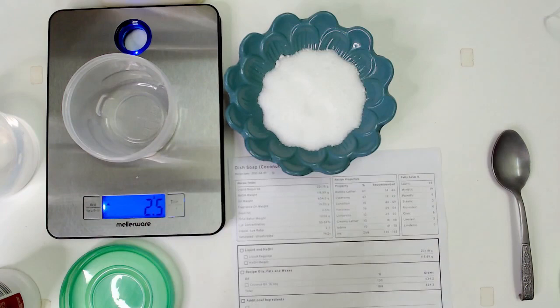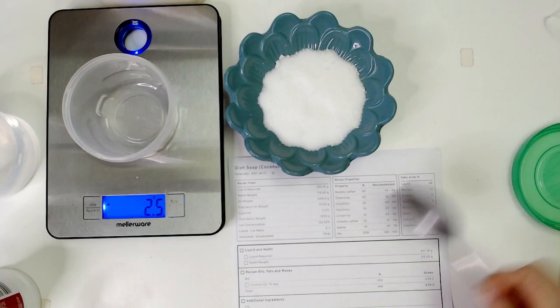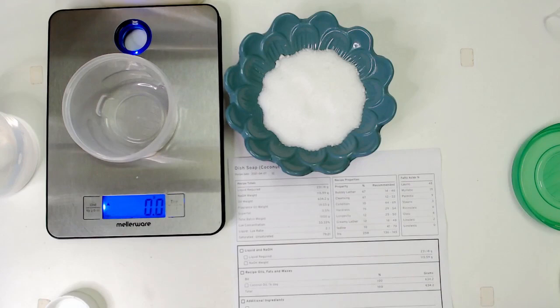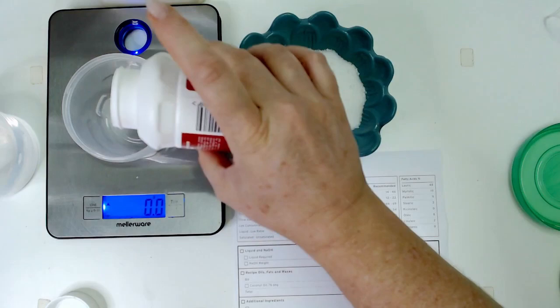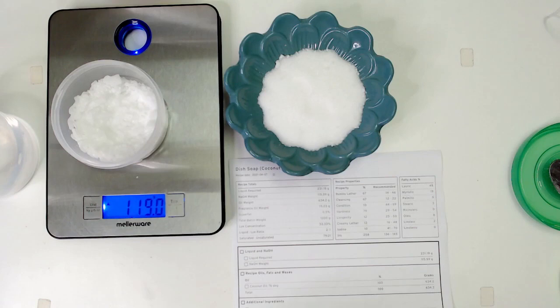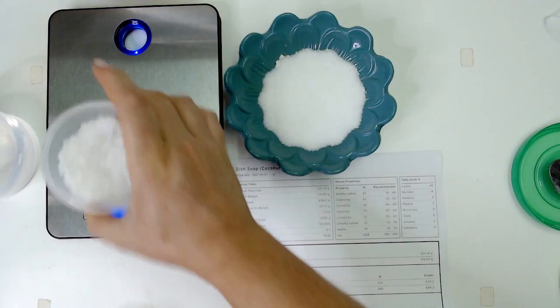I will put all the calculations and stuff in the description box as well so you can go and check it out and calculate your own amount regarding to what your recipe requires. The amount that I'm going to use for the sodium hydroxide is 115 plus 4, so it's 119 grams.